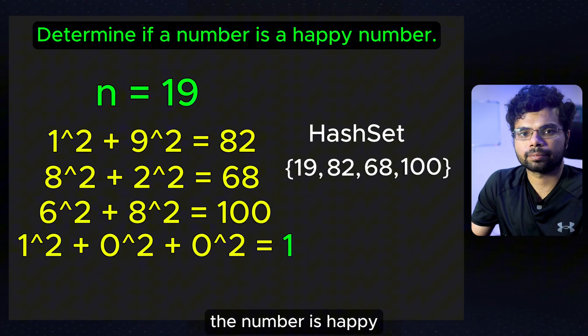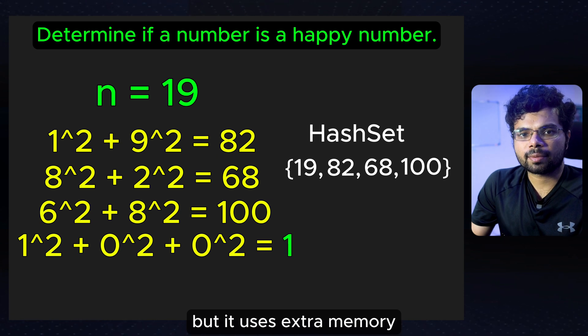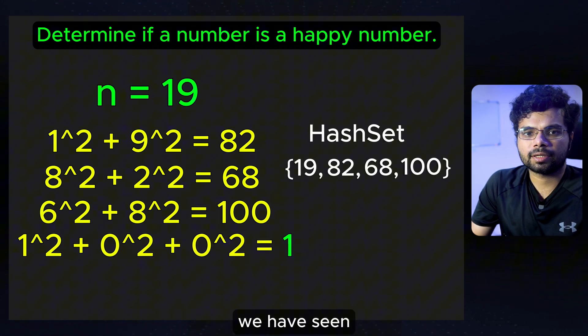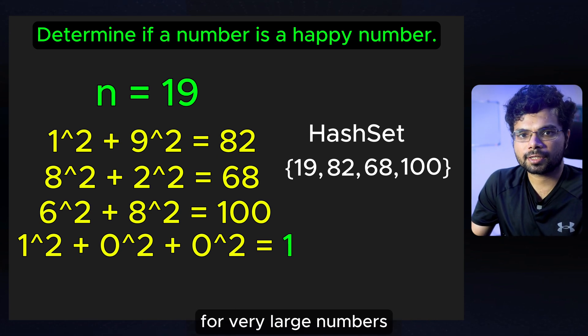If you reach 1, the number is happy. This approach works, but it uses extra memory to store all the numbers we have seen, which can become inefficient for very large numbers.